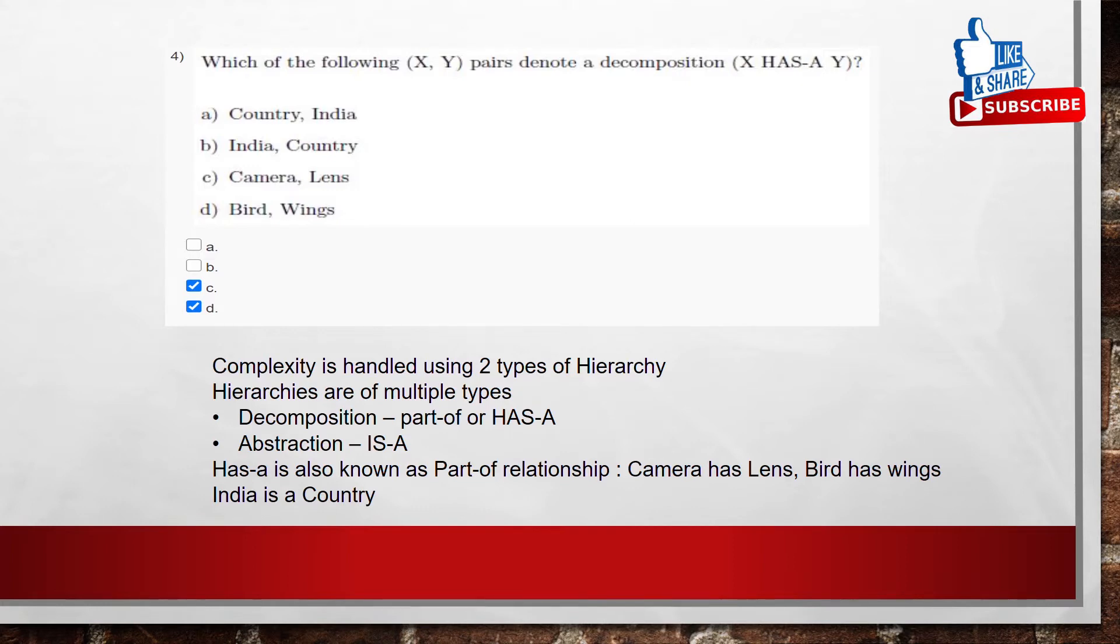We can't say India has country. We can say India is a country. So we can't take option A. For this country is a India, we can't say like that. Country has a India, we can't say like that. So coming to the options, C and D are the correct options.